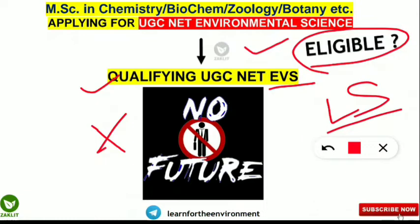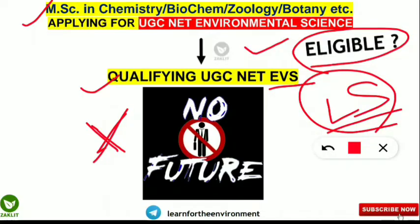If you are qualifying the NET LS (lectureship), you should be having the same subject in your master's to become a lecturer in environmental science. So for those students who are not in MSc environmental science and are from some other background, if you are only qualifying LS in the UGC NET environmental science paper, then there is no future at all. You can neither apply in your own subject as lecturer nor in environmental science, because you don't have environmental science in your master's. You won't be considered while applying for lectureship positions.